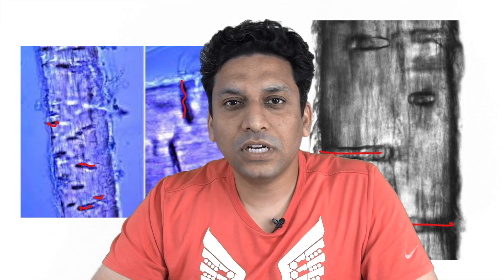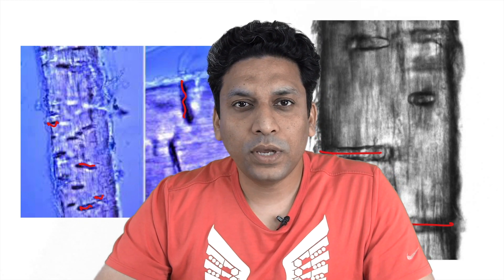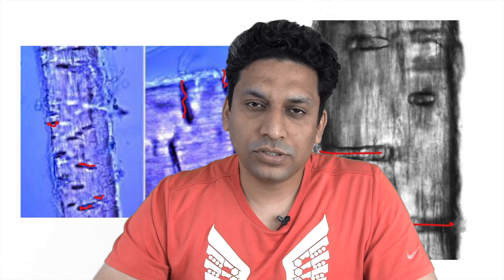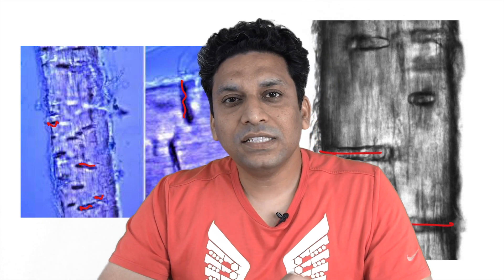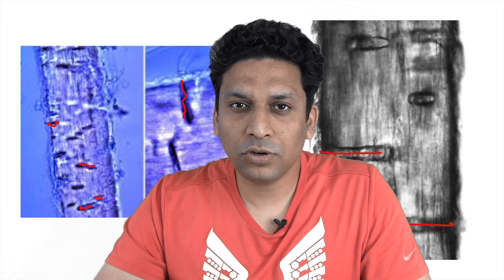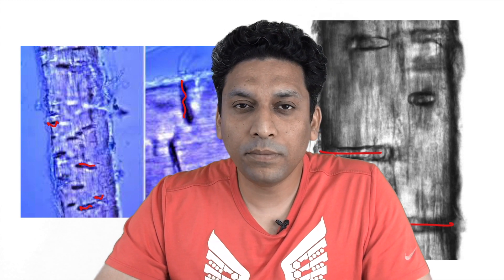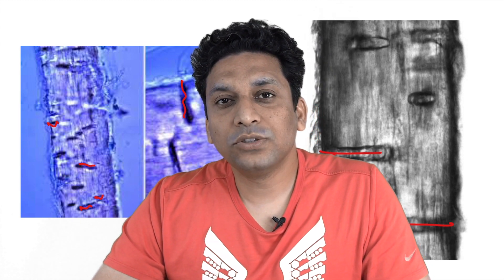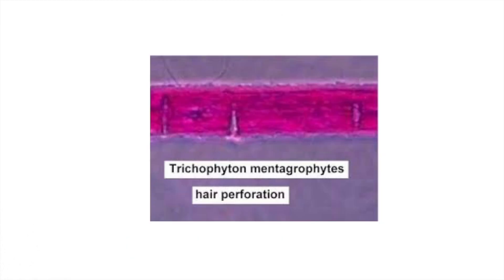This test is used for differentiating various dermatophytic infections. Remember, the hair perforation test is positive with Trichophyton mentagrophytes, while the most common causative agent for most tinea infections — tinea corporis, cruris, manum, pedis, and unguium — is Trichophyton rubrum. When the causative agent is T. rubrum, you will not find such pits or perforations. So this perforation test is seen positive for T. mentagrophytes.